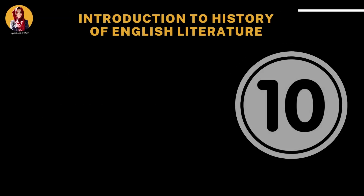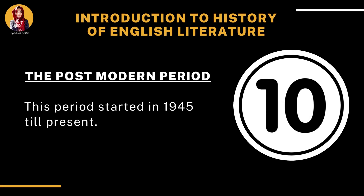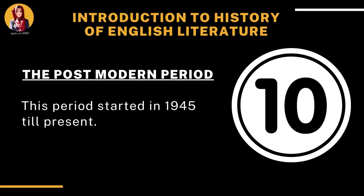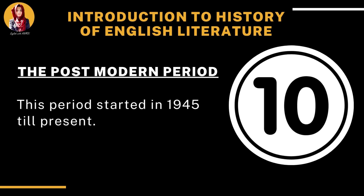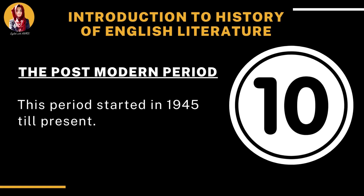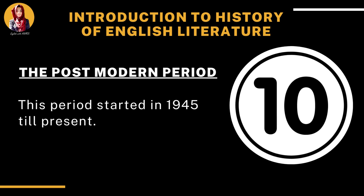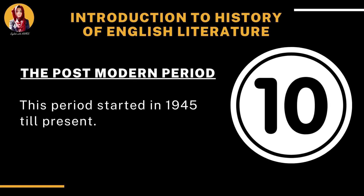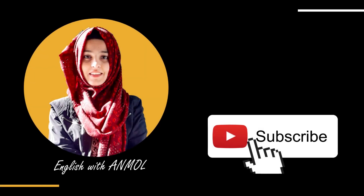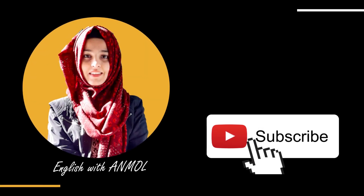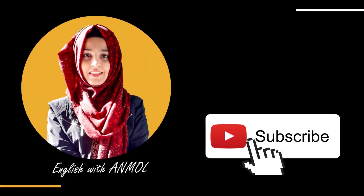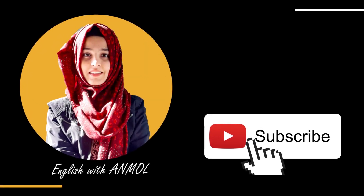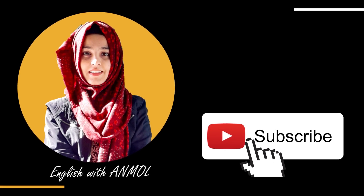The tenth and the very last period of the history of English literature is the Post-modern period, which started in 1945. So these were the periods of the history of English literature, which we will discuss in the upcoming lectures.